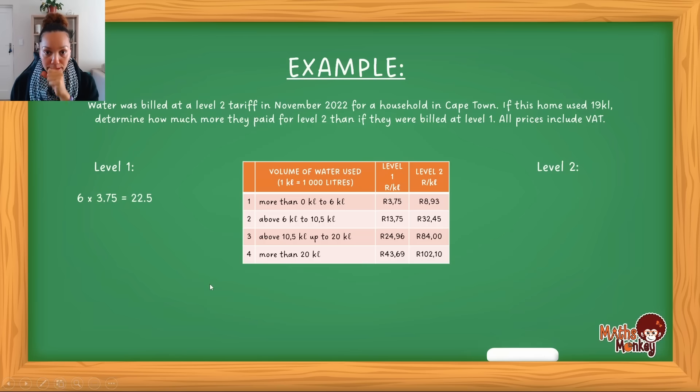So let's do that. Let's start off with level one. So this person between zero and six, if it was level one, the first six would then be 3.75. That would then be the total. Then the next 4.5 is then charged at 13.75. And then, so this is already 10.5. Remember we, this household used 19 kiloliters. So we have to continue up until we get to 19. Then the next one is whatever the difference is here. So what is the range of kiloliters here? It's 8.5. So 20 minus the 10.5 will give you the 8.5. So in this range, the 8.5 which was used will be charged at 24.96.